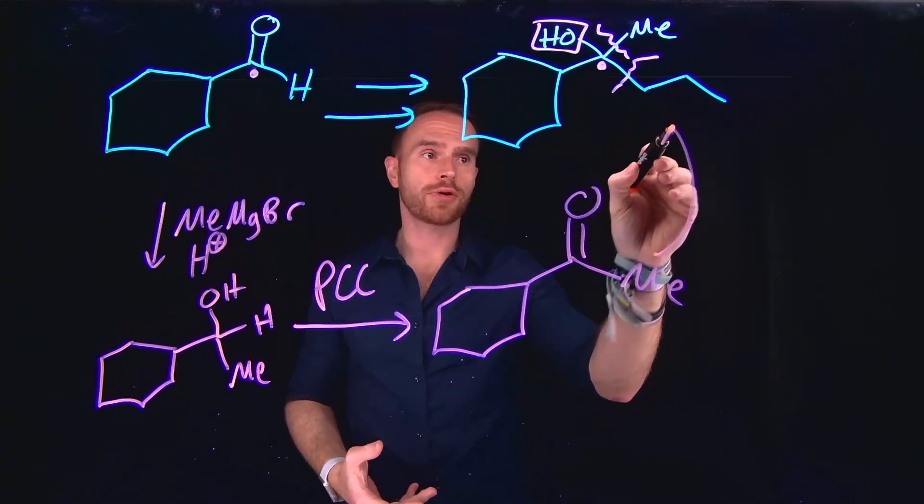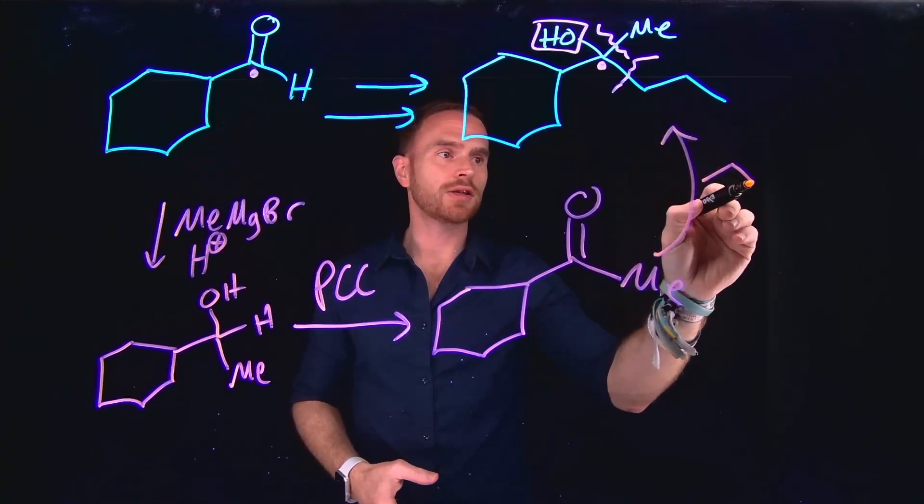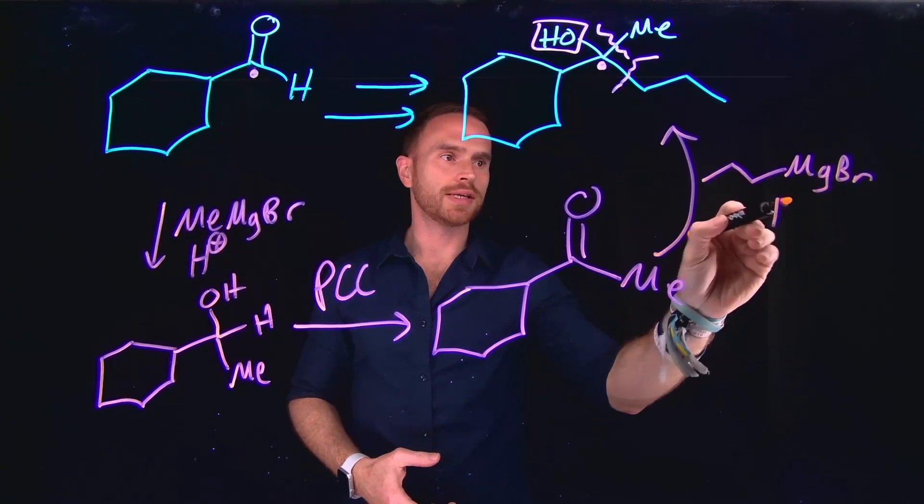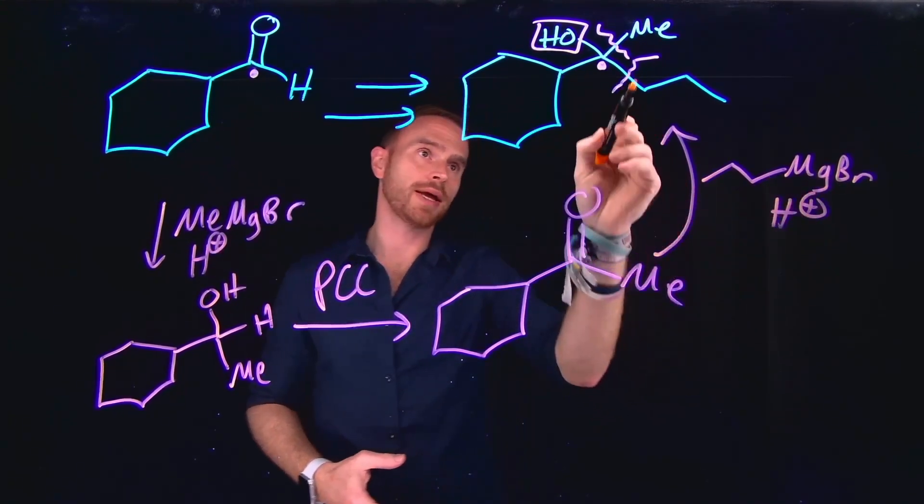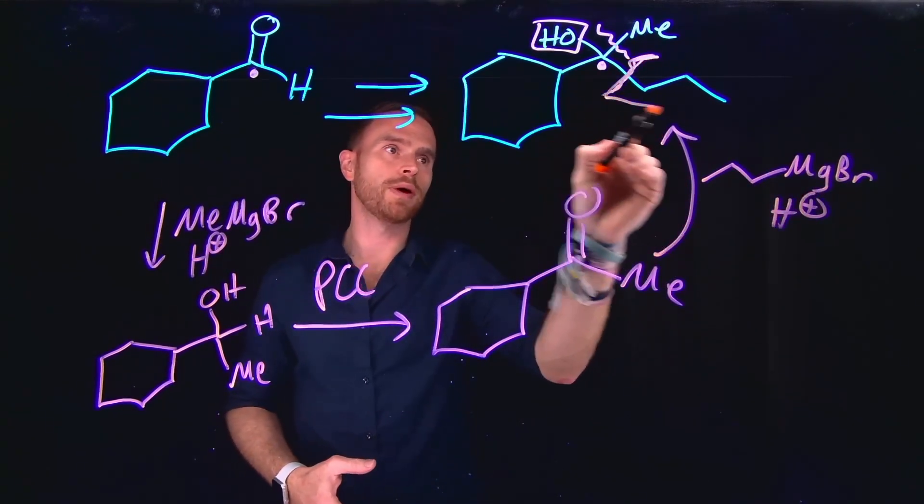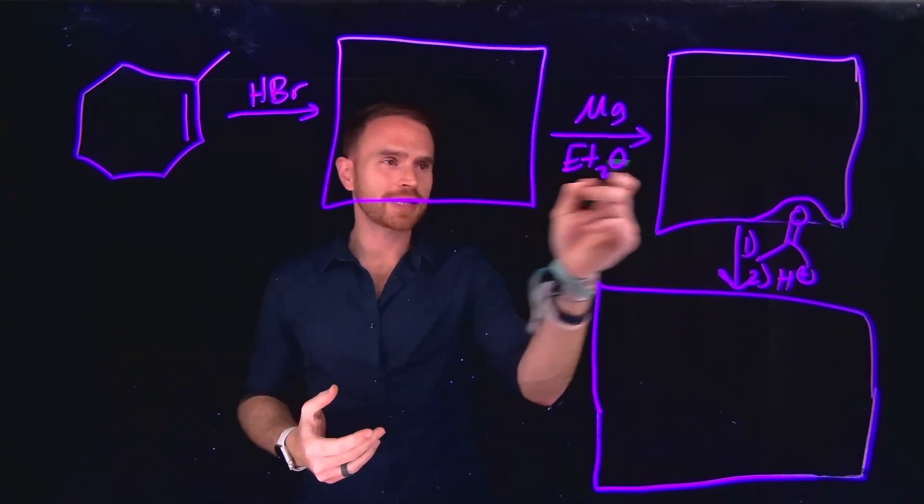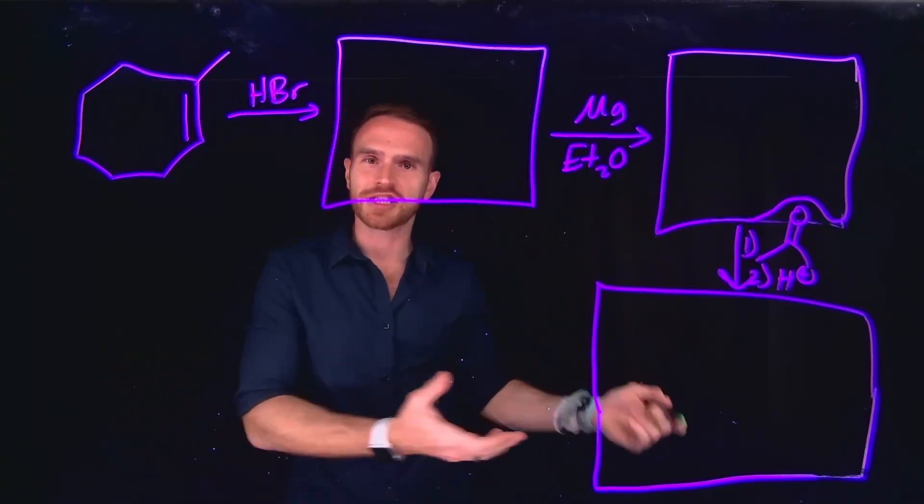And now once we generate this ketone with a methyl group on it, we can add another Grignard reagent. But this time, as long as it is a propyl group, we can follow that up with an acidic workup to generate and install that propyl group on the end.